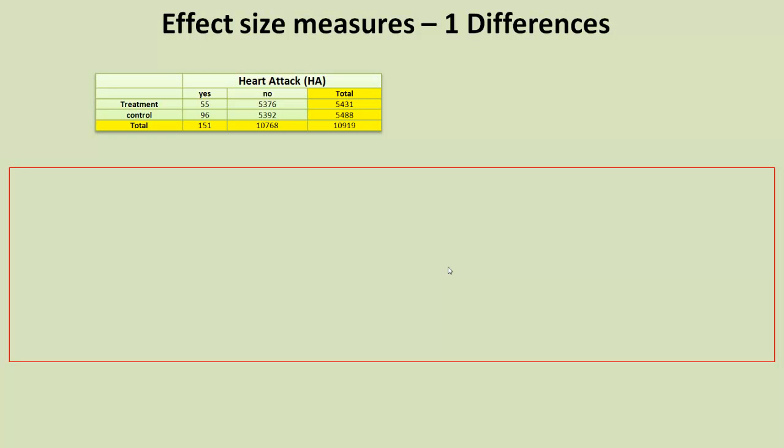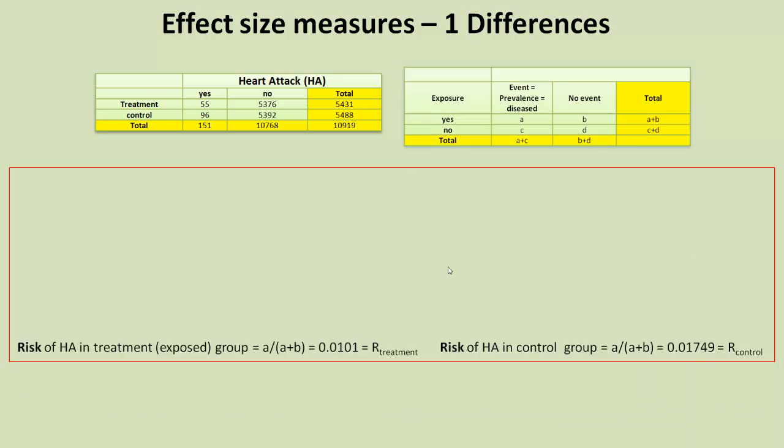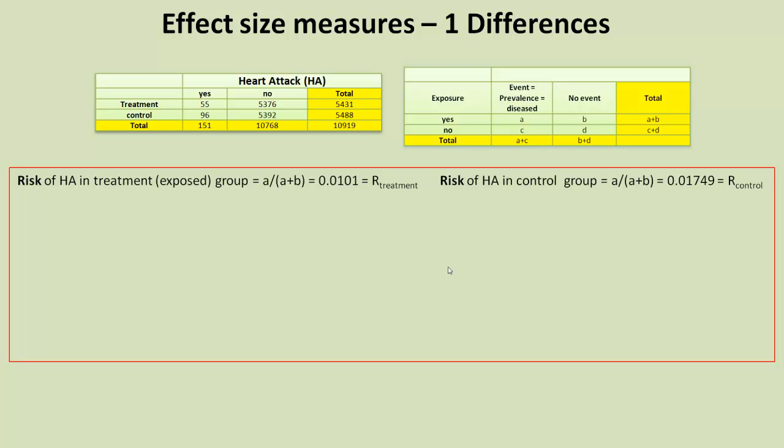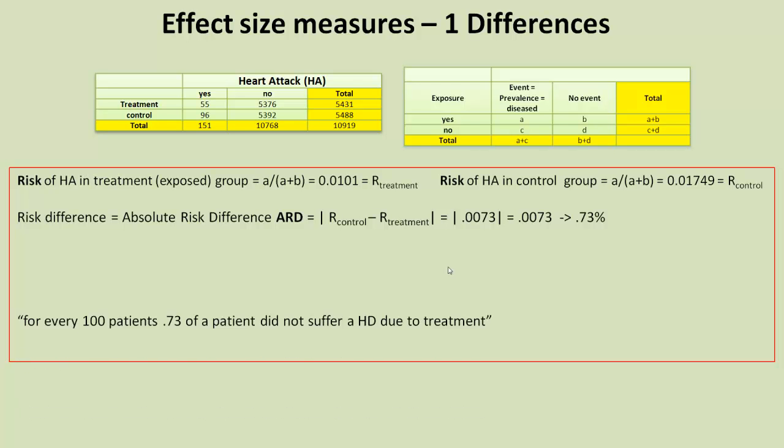Right, so let's consider some of these effect size measures now. The first time for effect size measures, we're going to look at those based upon differences. And, the first difference we had was risk. We had the risk for the treatment group and the risk for the control group. And if you just take the difference between the two, it's called the absolute risk difference. And we get there, 0.0073, which equals 0.73%.